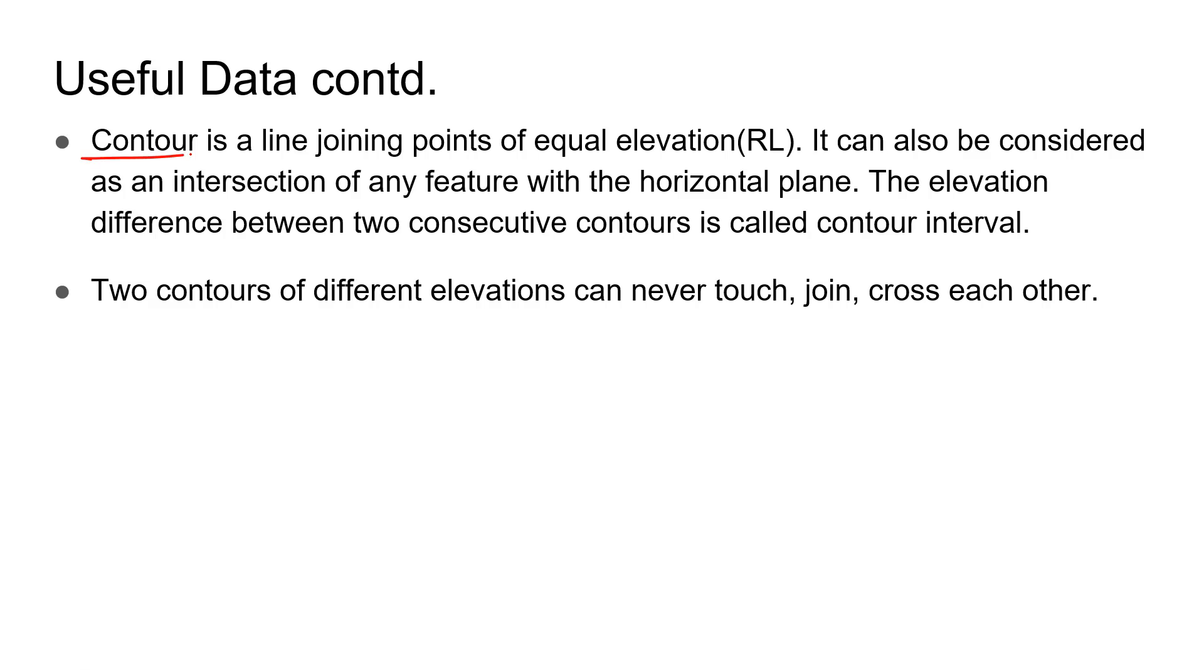Coming to the third statement about contours: A contour is a line joining points of equal elevation. Let's say we have a cliff with elevations varying from top to bottom—280 meters at this point, 260 meters here, and 240 meters here.